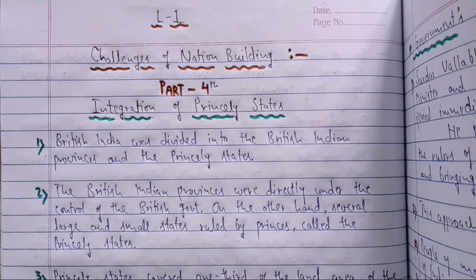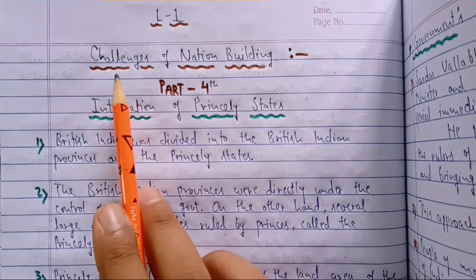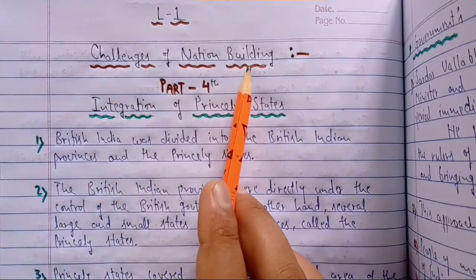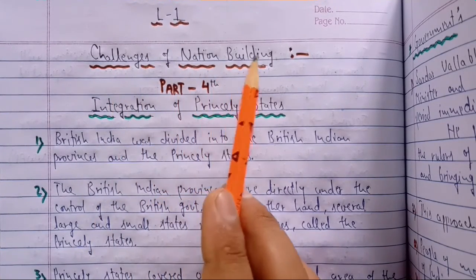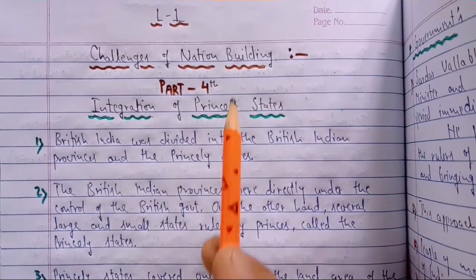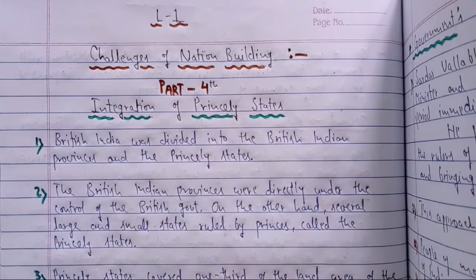Good morning to all the students of Class 12 Political Science. Welcome back to online classes. We were doing the first chapter of Book B, that is Part B - Indian Politics Since Independence, and the name of the chapter is Challenges of Nation Building, one of the most important chapters to understand this complete book, so each and every topic is very much important and relevant to each other.